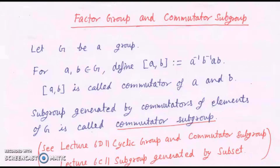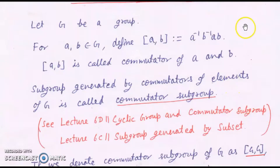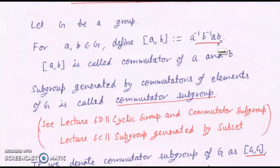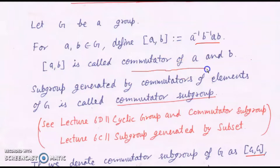Suppose G is a group and if I take two elements A and B of the group G, then the commutator of A and B, denoted as [A,B], is defined as A⁻¹B⁻¹AB. In some books, it may be written as ABA⁻¹B⁻¹. Both are correct, but for our purpose, we are going to take [A,B] to mean A⁻¹B⁻¹AB. So [A,B] is called the commutator of elements A and B.